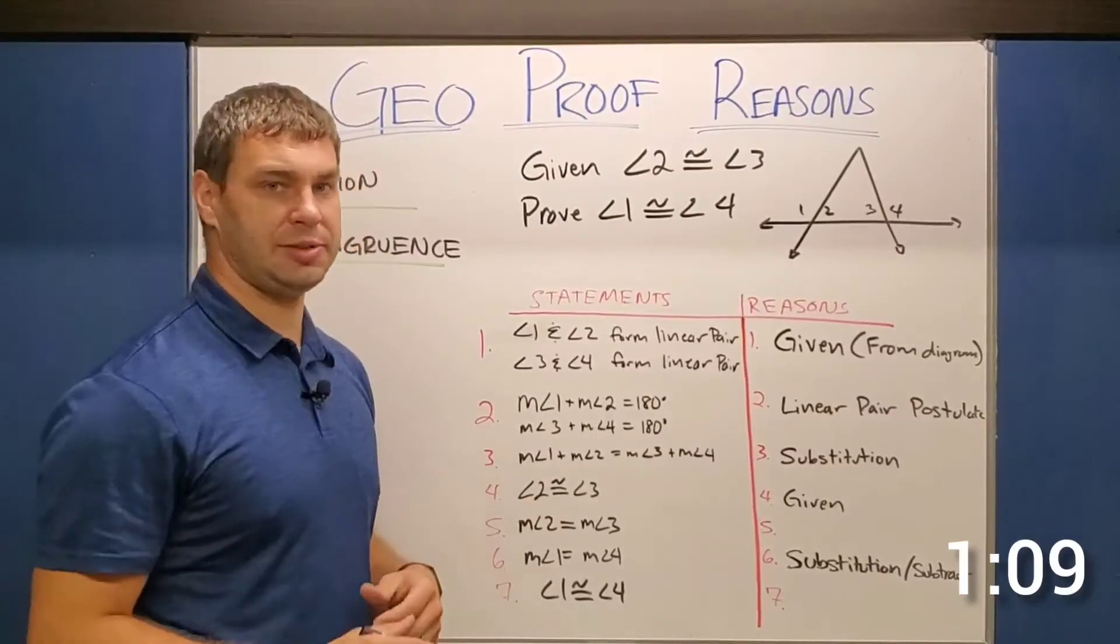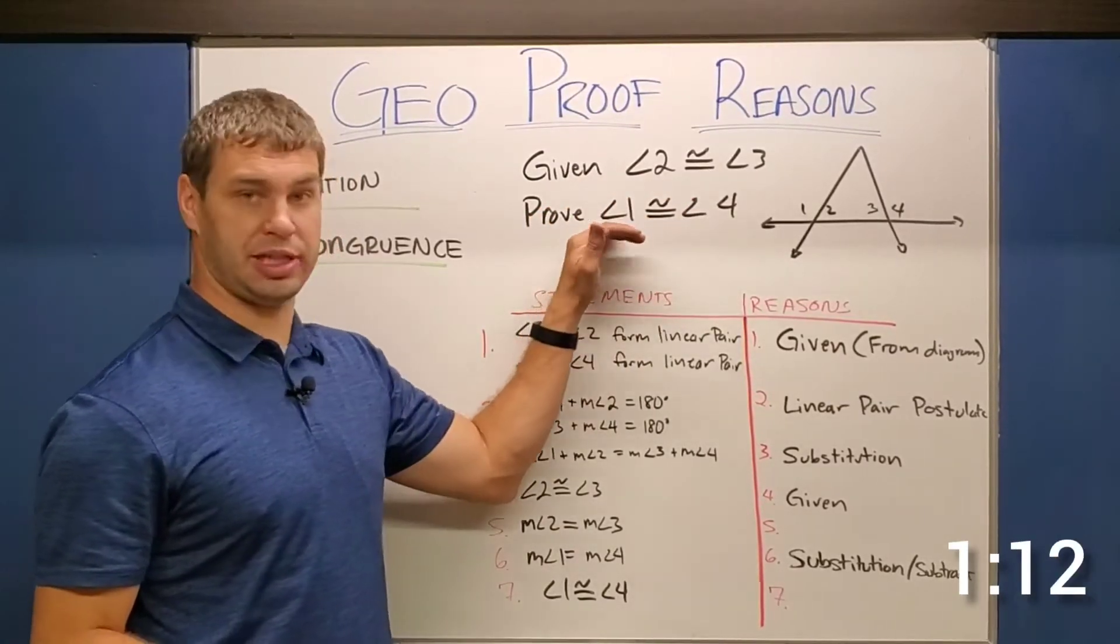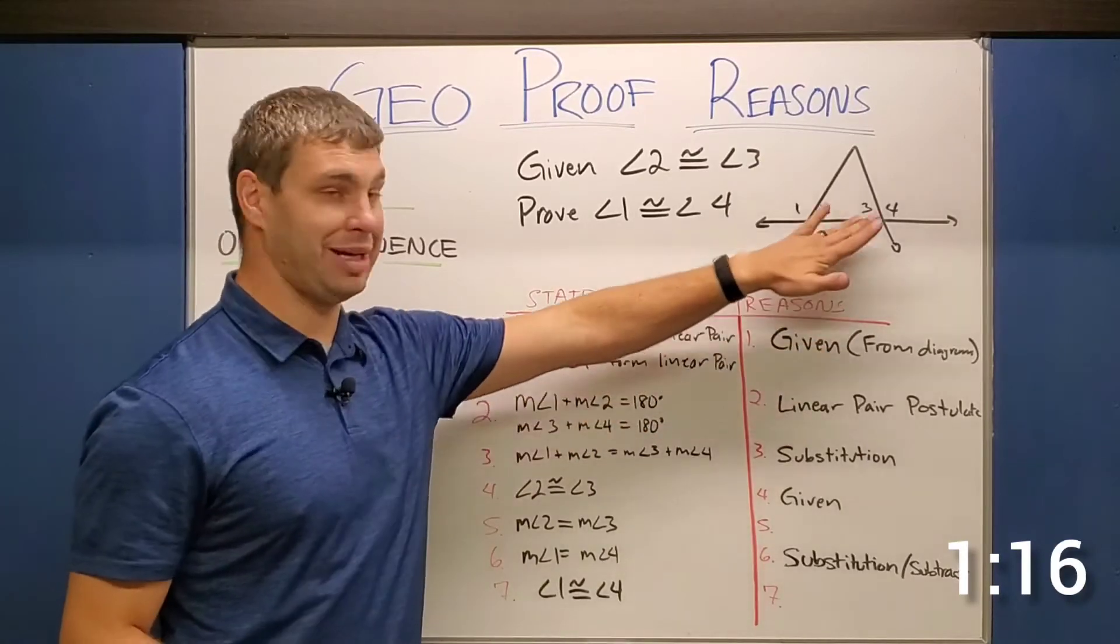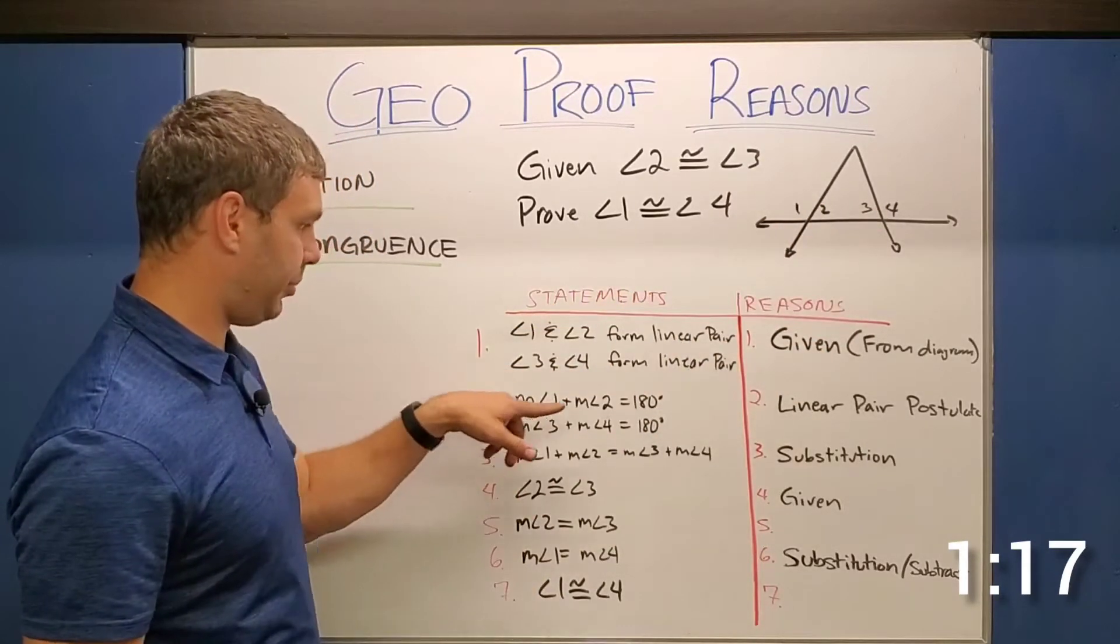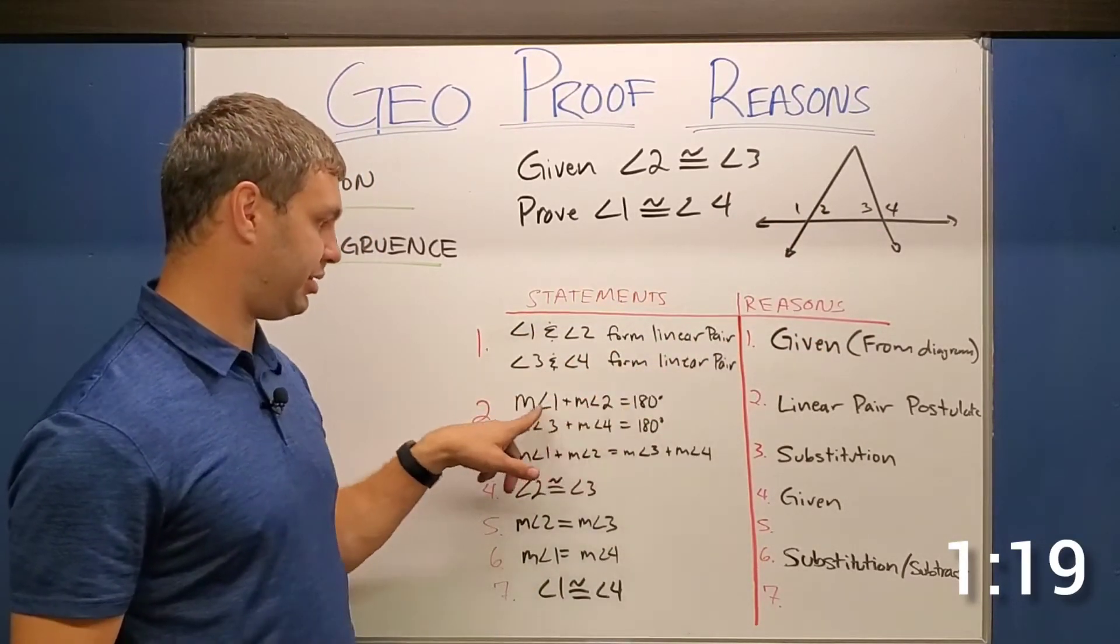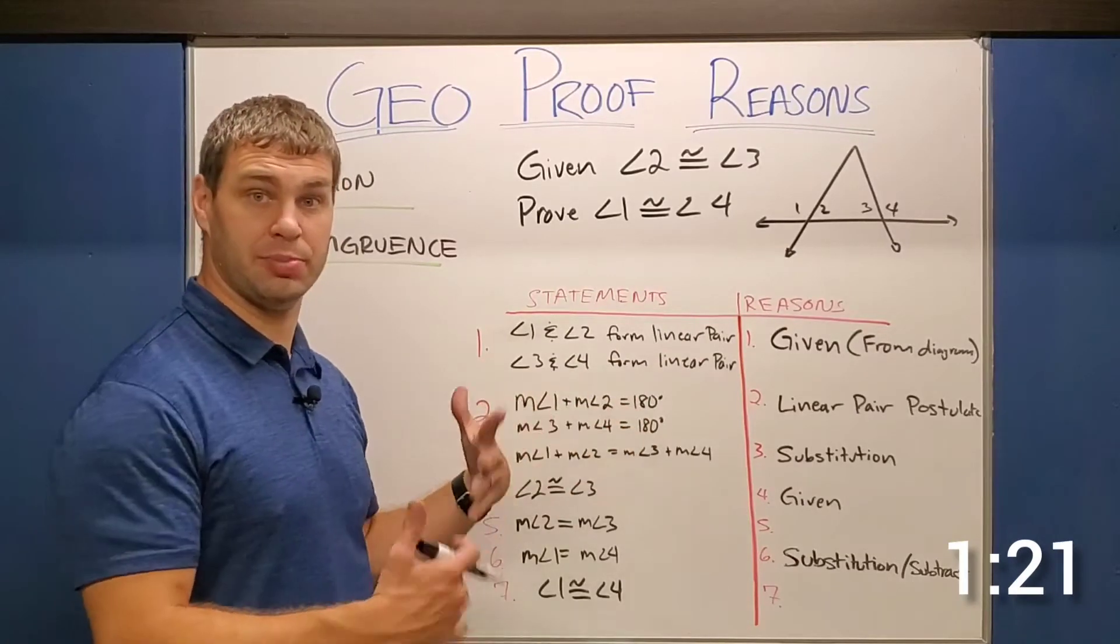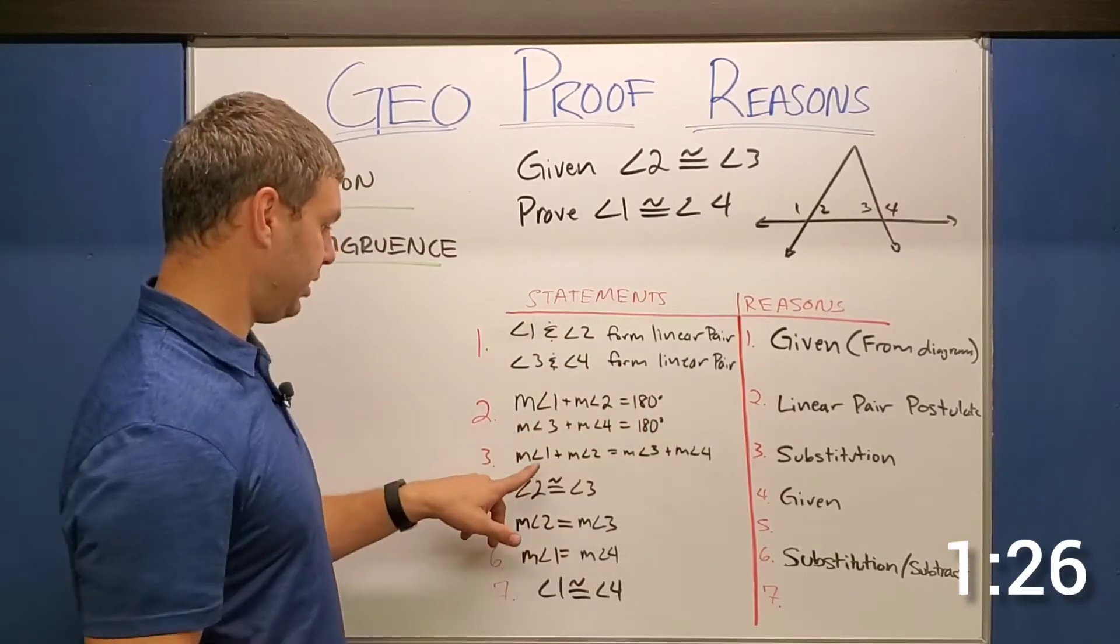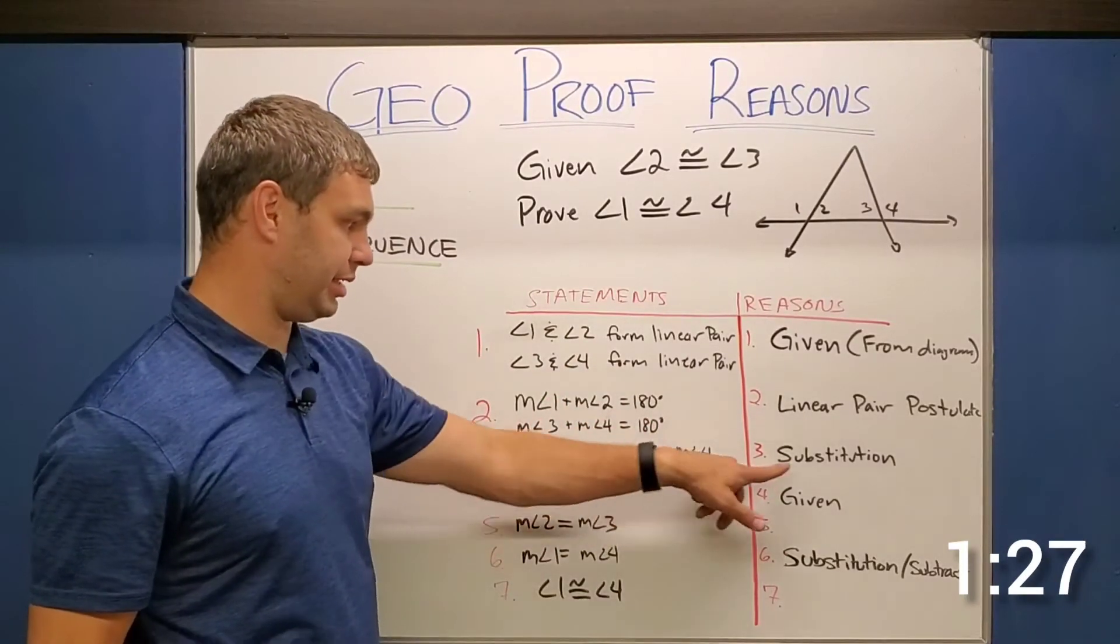Proof two. Our next proof says that we're given angle two is congruent to angle three. We're trying to prove angle one is congruent to angle four. I actually got my first given from my diagram and then because these are linear pairs, I was able to set them equal to 180. Since they're both set equal to 180, I can set them equal to each other. If they're both equal to 180, they're both equal to each other. And so that's where line three came in by substitution.